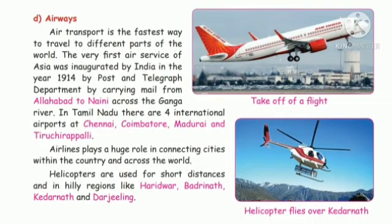Students, we have completed unit 3, transport. Now let's recap. Transport is the movement of people, animals and things from one place to another. The four modes of transport are roadways, railways, waterways and airways. Roadways are used to travel by bicycles, buses and cars. The four types of roadways are national highways, state highways, district roads and village roads. Railways is the most important mode of transport connecting the states. Waterways include transport done through water bodies via boats, speed boats and ships. Airways is the fastest way to travel, using aeroplanes and helicopters.